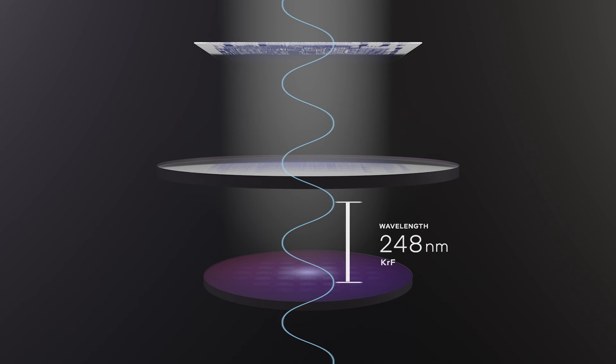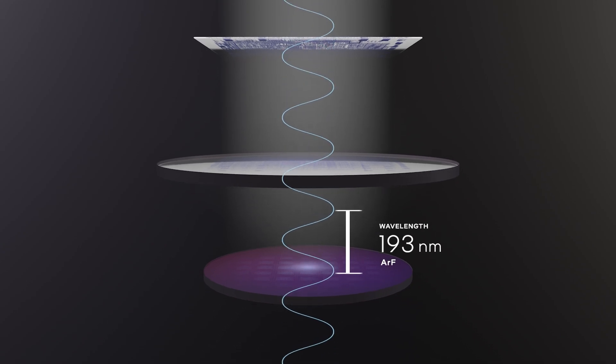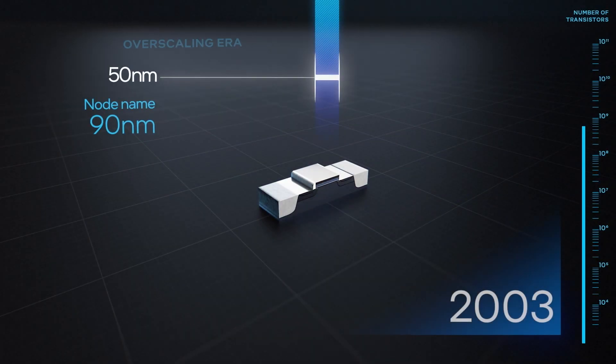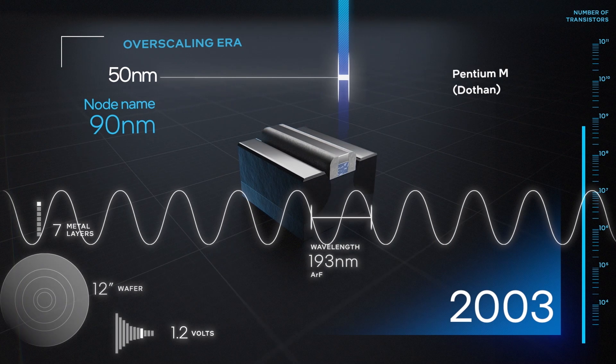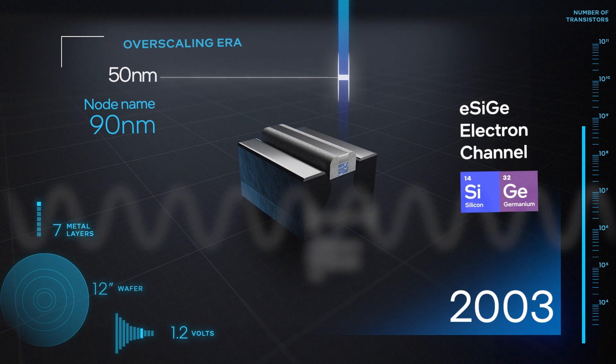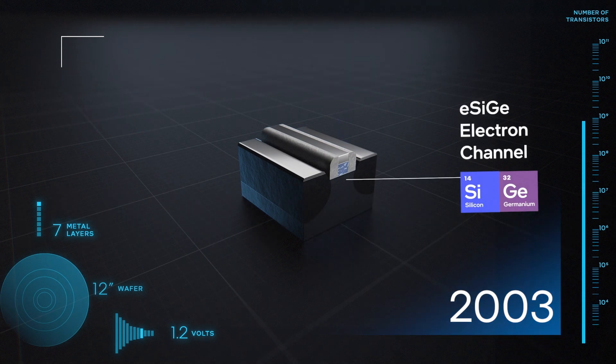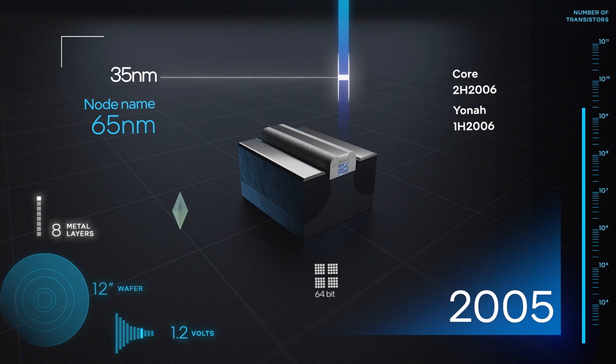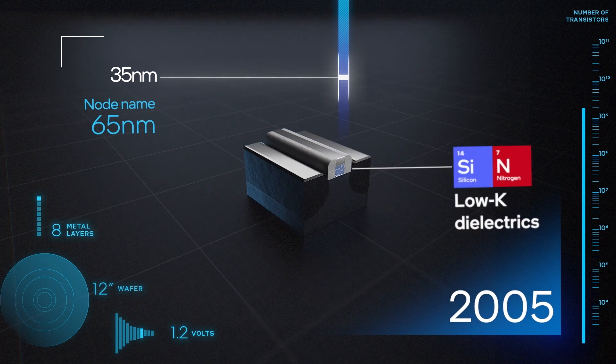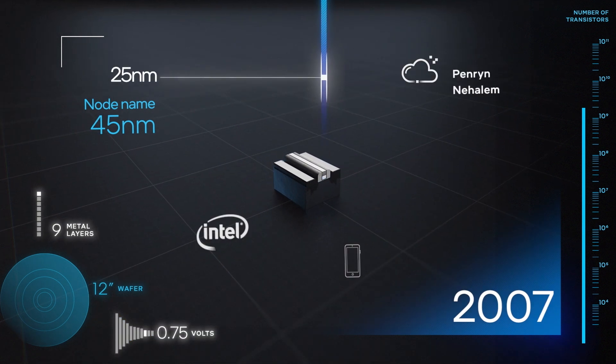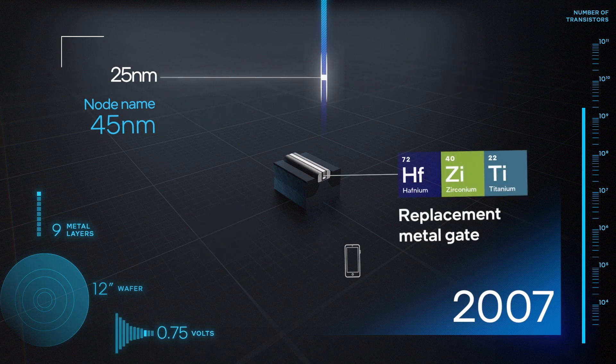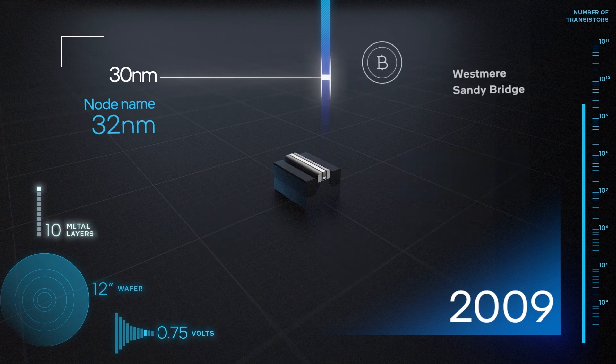A new smaller wavelength light source helped print ever smaller lines, whilst another new material for the channel helped increase transistor speeds. That was soon followed by even more radical material changes. A new insulating material between the conductors and the replacement of the polysilicon gate material with a combined metal high-k gate structure that was better at limiting costly leakage currents.